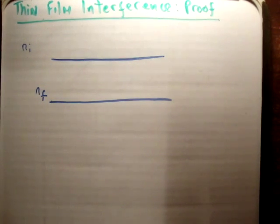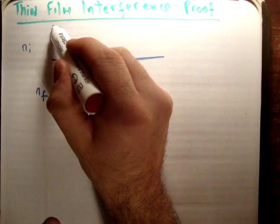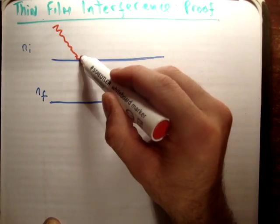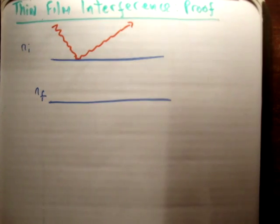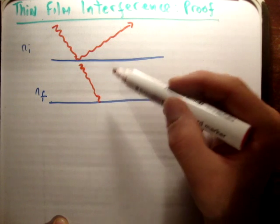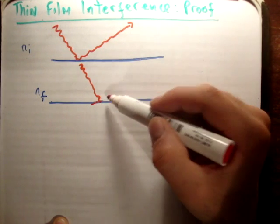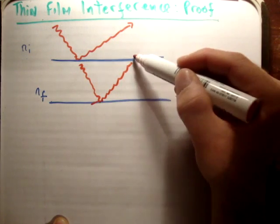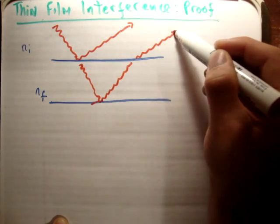An array is coming in like this, and some of it reflects immediately. However, some of it is transmitted through and eventually hits off the second boundary, it reflects up to here, and then it transmits again.